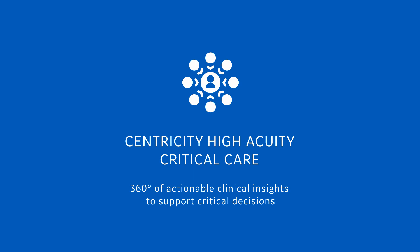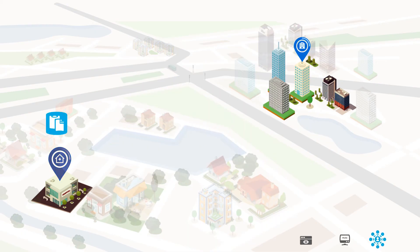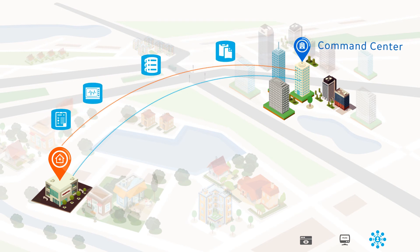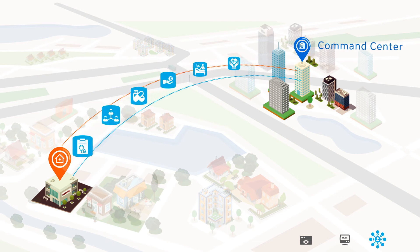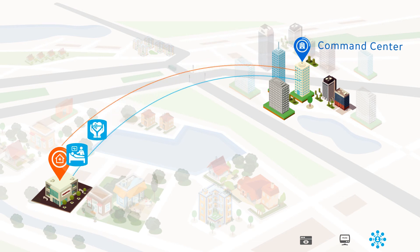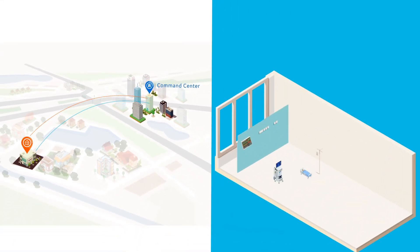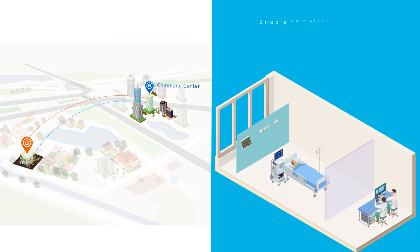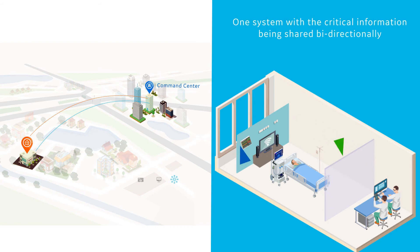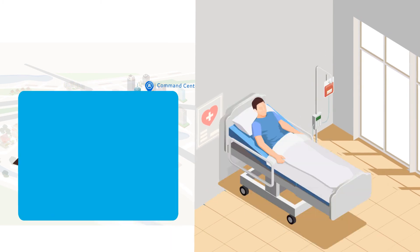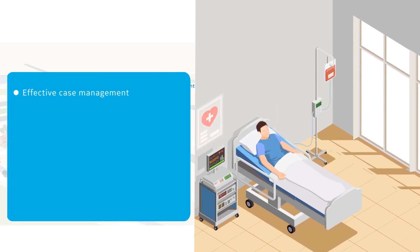Centricity High Acuity Critical Care comprises a secured remote patient monitoring system, aided by optional real-time two-way audiovisuals with 24x7 access, making it an ideal tele-ICU solution. It has been designed to interface with other clinical information systems to enable complete digitization throughout the care continuum. This ensures that you can use one system with critical information being shared bi-directionally. Although the platform supports different workflows in ICU and anesthesia, data continuity between departments allows for analytics across departments.